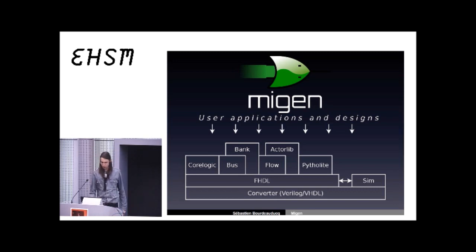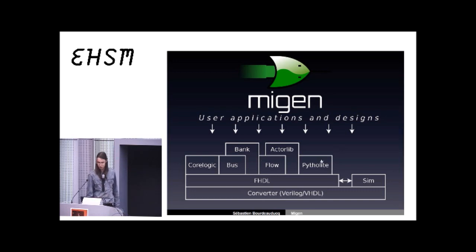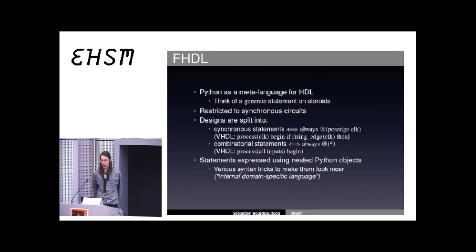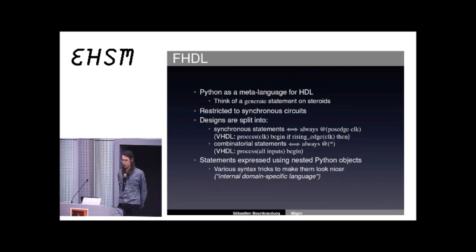Migen provides all those tools that you see here, and I will briefly go through a couple of them. I will start with the base of Migen which enables everything else to work, which is the FHDL layer. FHDL stands for Fragmented Hardware Description Language. The very key idea of FHDL is to enable you to use Python as a meta-language for hardware description of complicated designs.